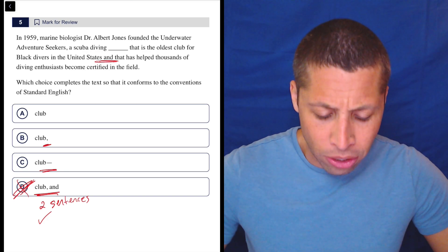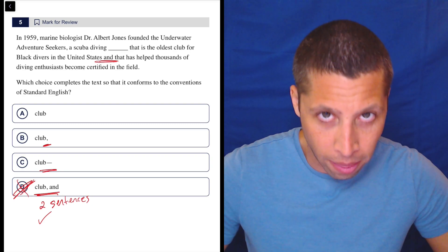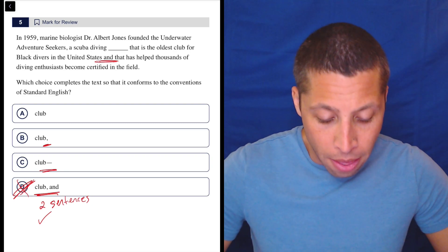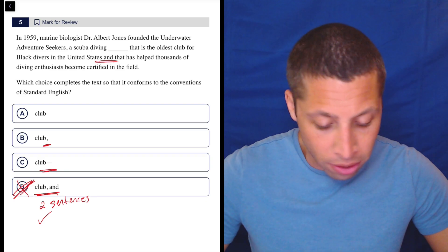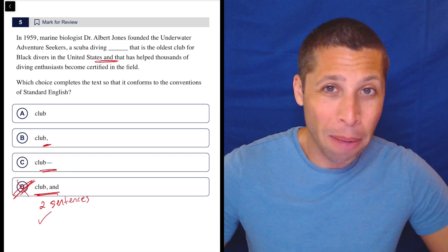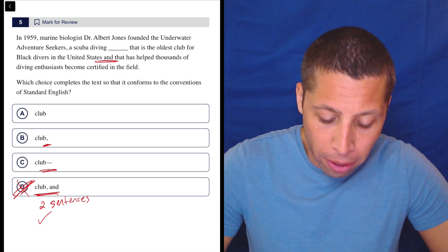Let's try it again. In 1959, marine biologist Dr. Albert Jones founded the Underwater Adventure Seekers. That sounds like a sentence. A scuba diving club that is the oldest club for black divers in the United States and that has helped thousands of diving enthusiasts become certified in the field. Again, adding that pause there, that break as in B and C, it just seems weird. Let's try it without it. Let's try A.